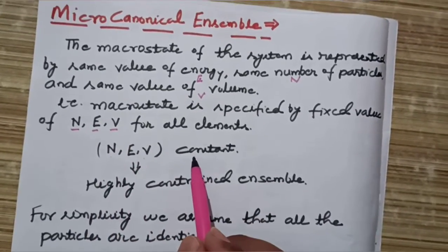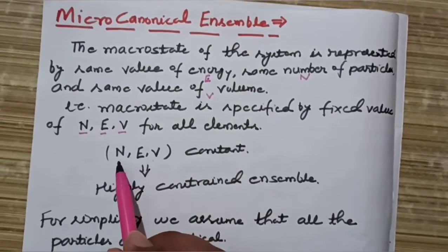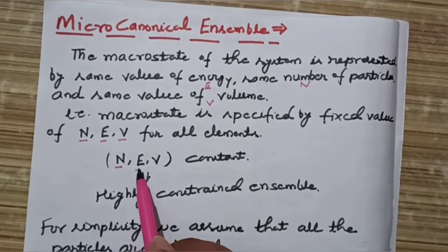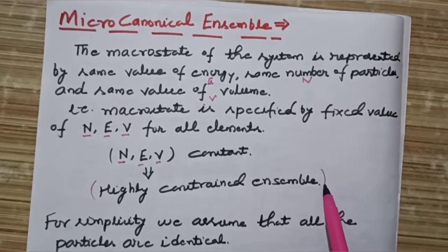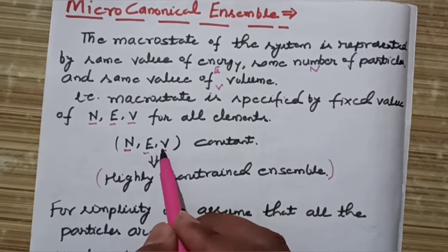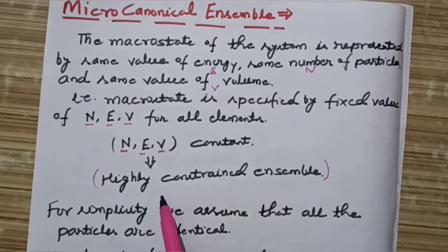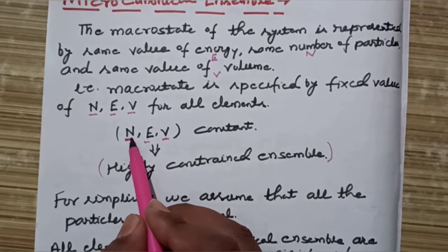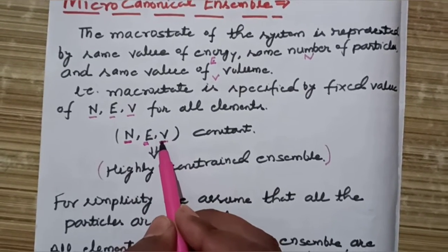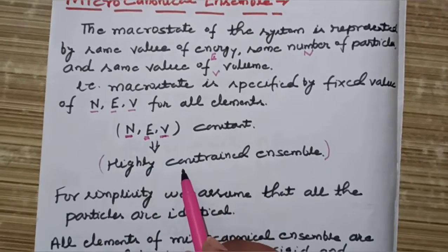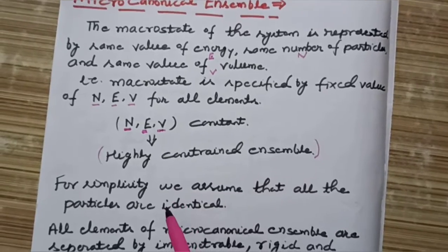The values of N, E, and V are constant in the micro canonical ensemble. Because the number of particles, energy, and volume are all constant, this system is said to be highly constant in number. All terms required to specify the system — number of particles, energy, and volume — are constant, which is why it is called a highly constant system.